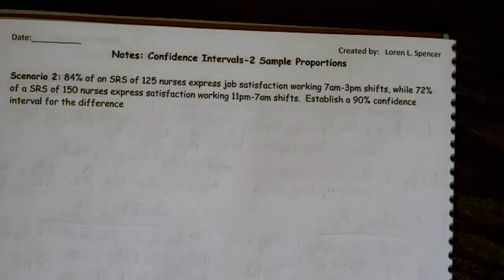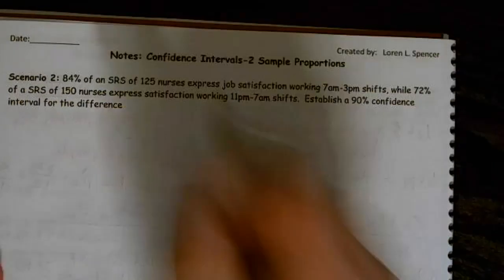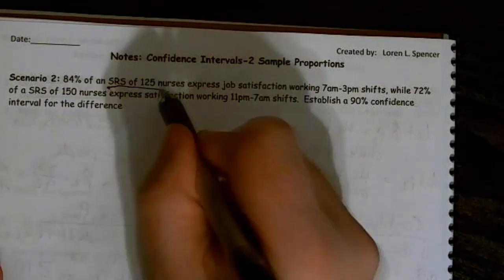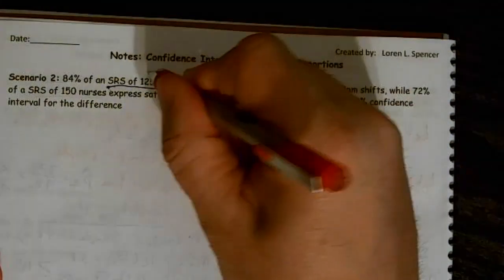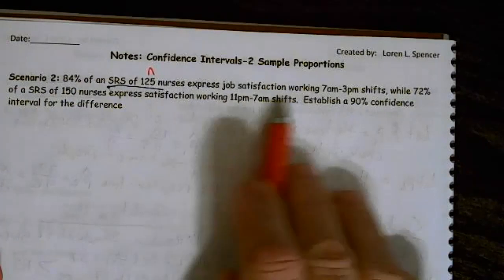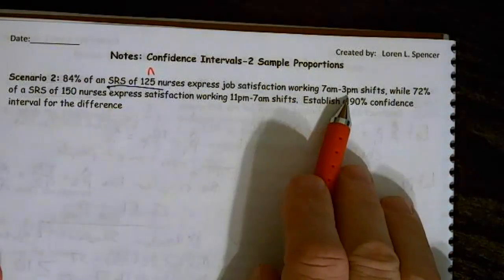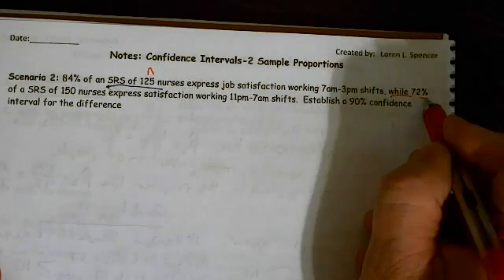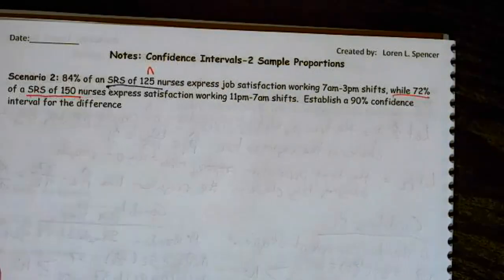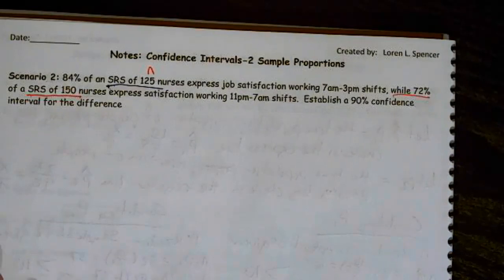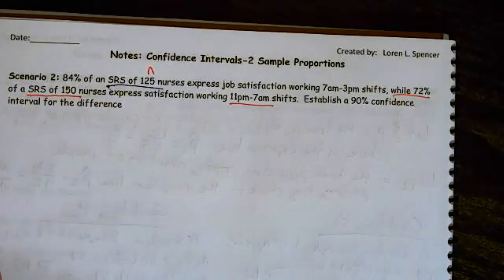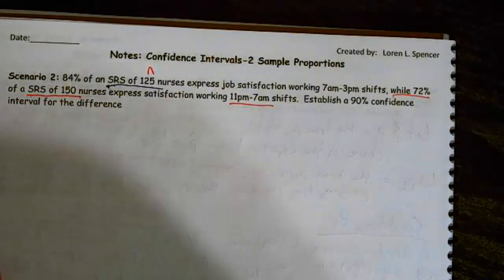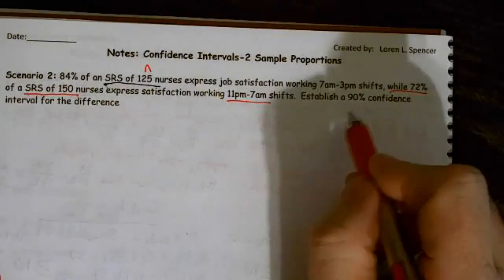So 84% of a simple random sample - that's important - simple random sample of 125 nurses expressed job satisfaction. So this right here is going to be my n, working the 7 a.m. to 3 p.m. shifts, while 72% of a simple random sample of 150 nurses expressed satisfaction working in the 11 to 7 a.m. shifts. Establish a 90% confidence interval for the difference.